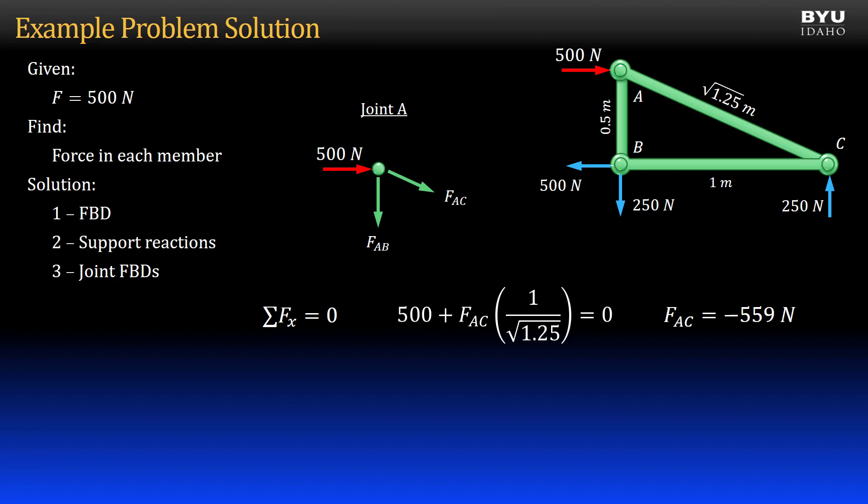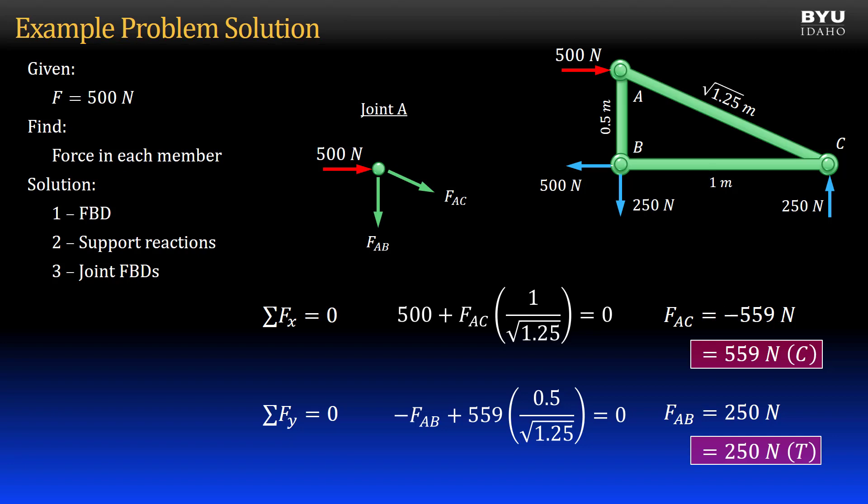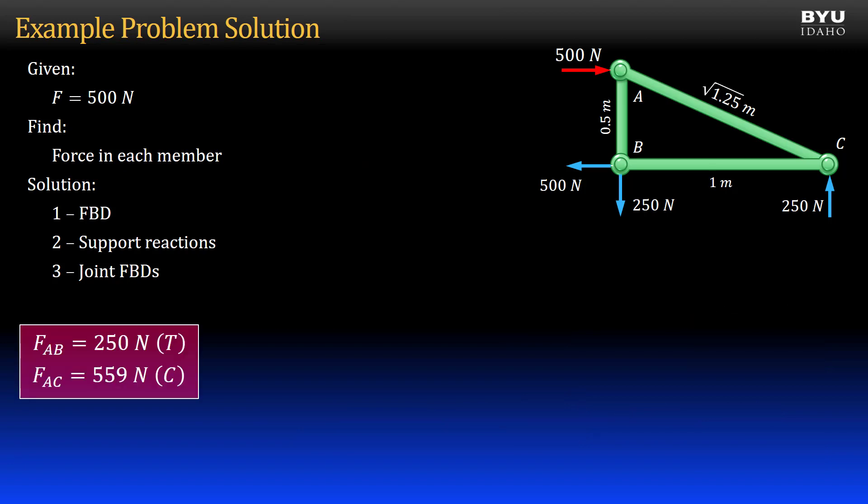The negative sign means that the force in the member is the opposite of the way I have drawn it in my free body diagram. Since I drew all forces in tension, the negative sign immediately tells me the member is in compression. I show it like this. Now I sum forces in the y-direction to zero to get force AB. I get positive 250 Newtons. So member AB is in tension. I now have two of my three member forces.